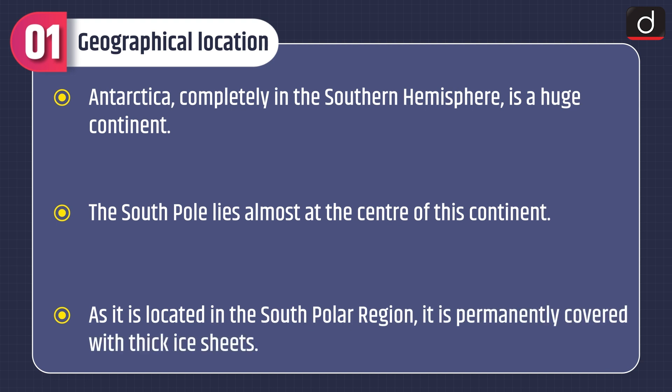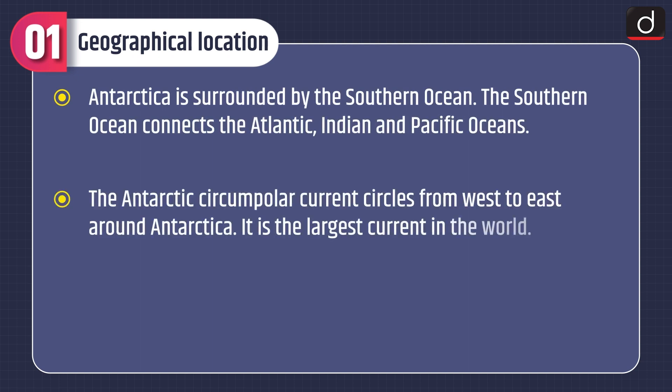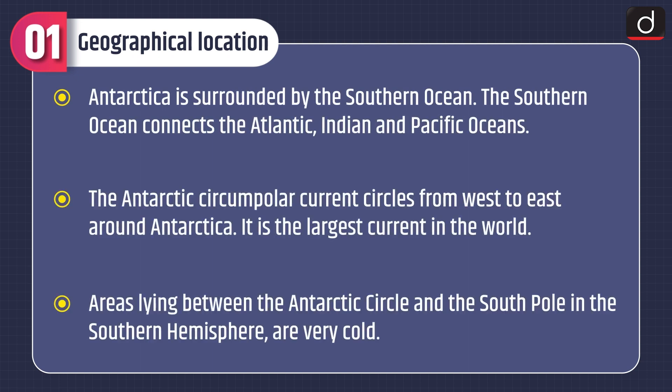Antarctica, completely in the southern hemisphere, is a huge continent. The South Pole lies almost at the center of this continent. As it is located in the south polar region, it is permanently covered with thick ice sheets. Antarctica is surrounded by the Southern Ocean, which connects the Atlantic, Indian, and Pacific Oceans.